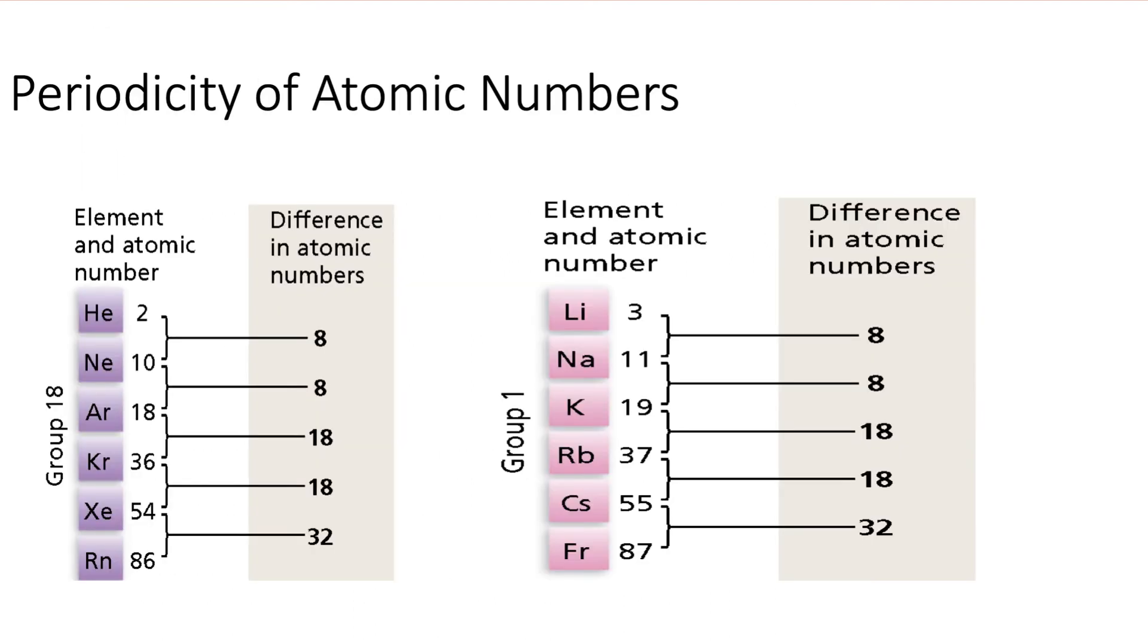We see here a periodicity of atomic numbers. To the left here we see the element and the atomic number and the differences in the atomic number. And we see either group 1 or group 18 or group 8A as the same pattern: 8, 8, 18, 18, 32. They have the same patterns.